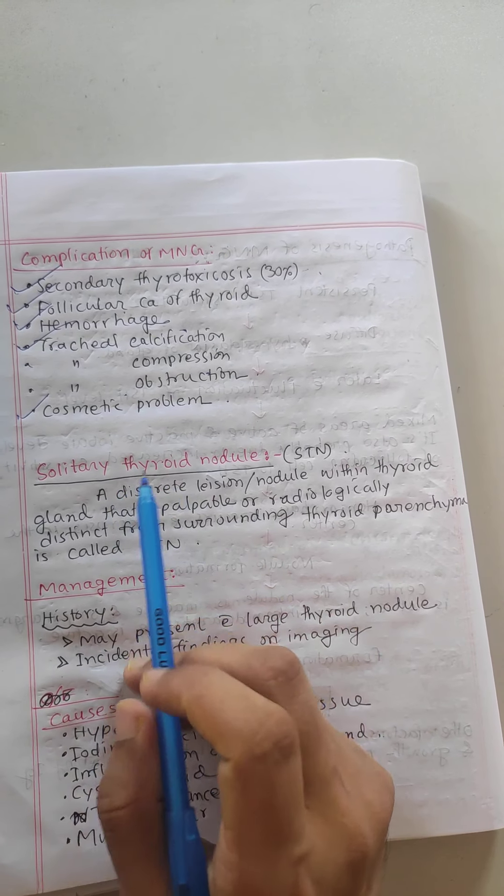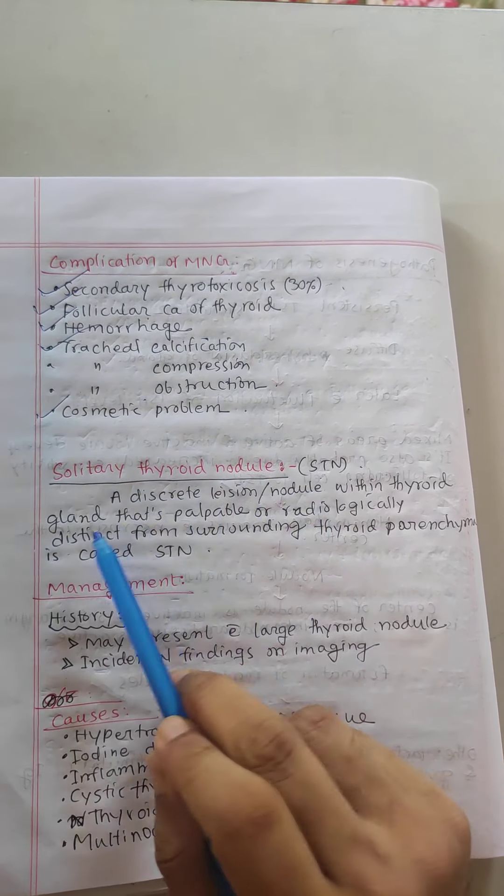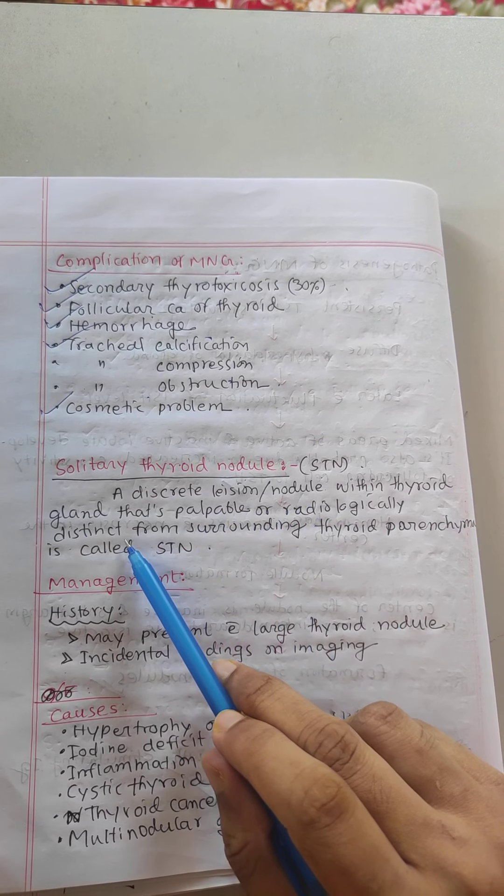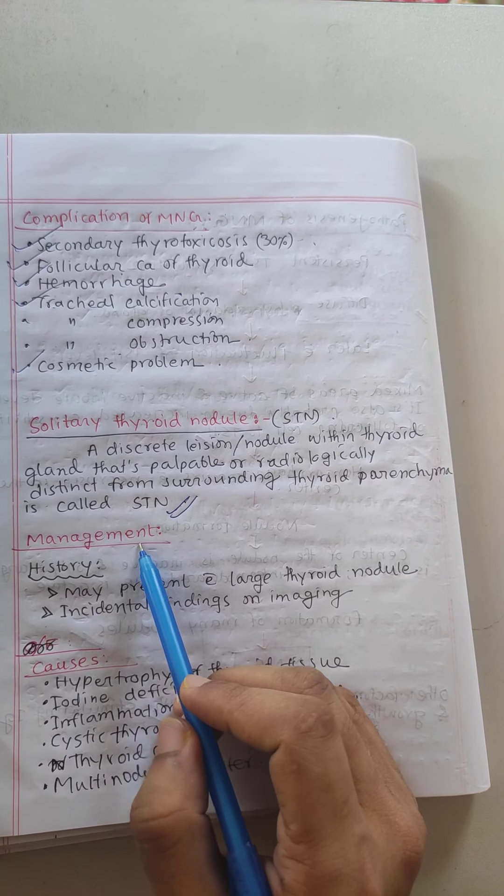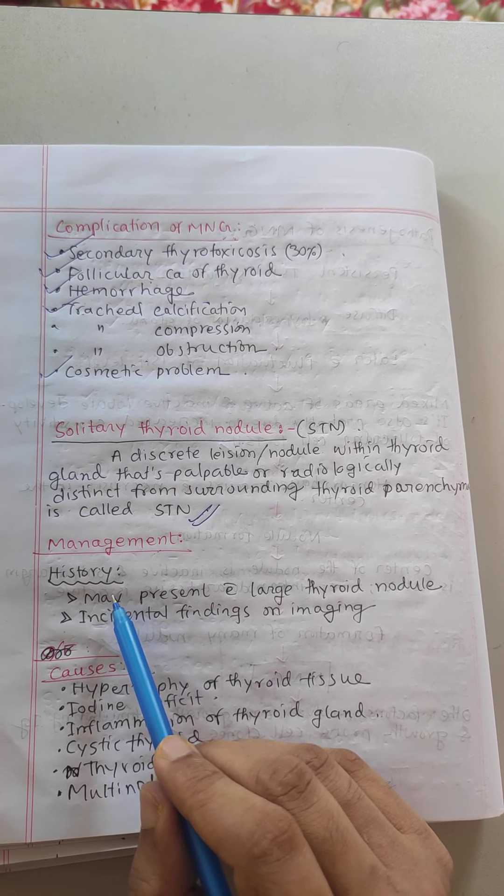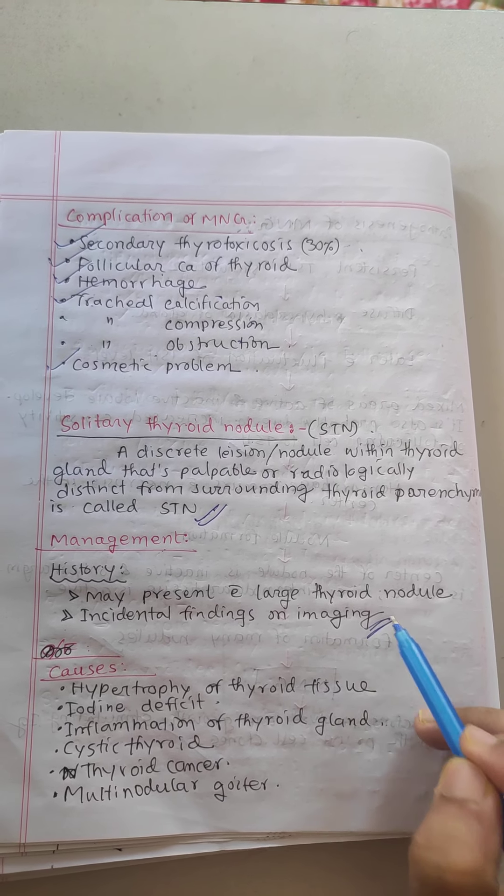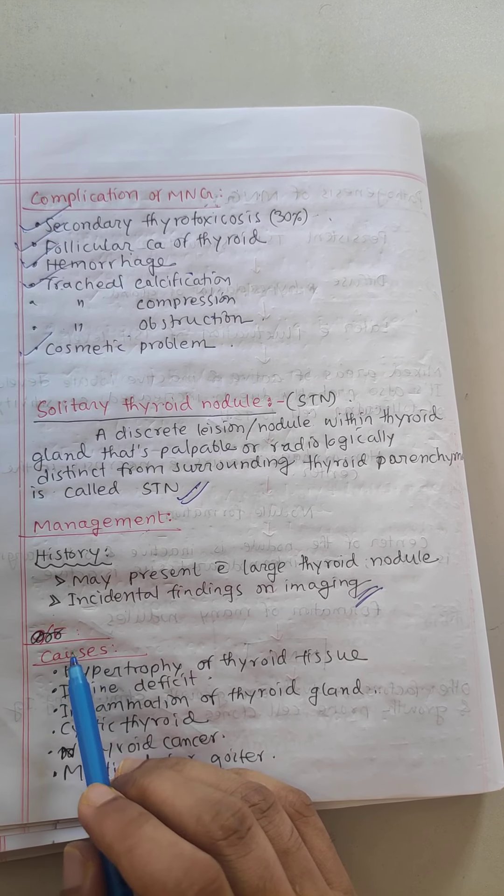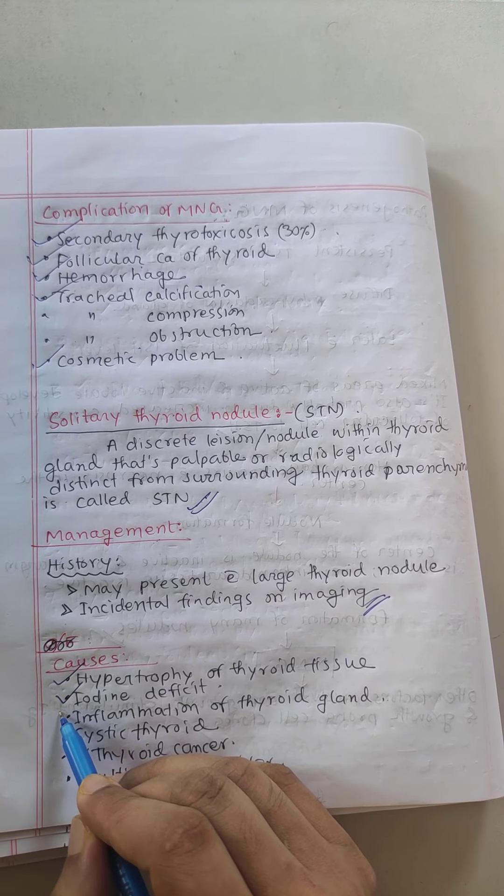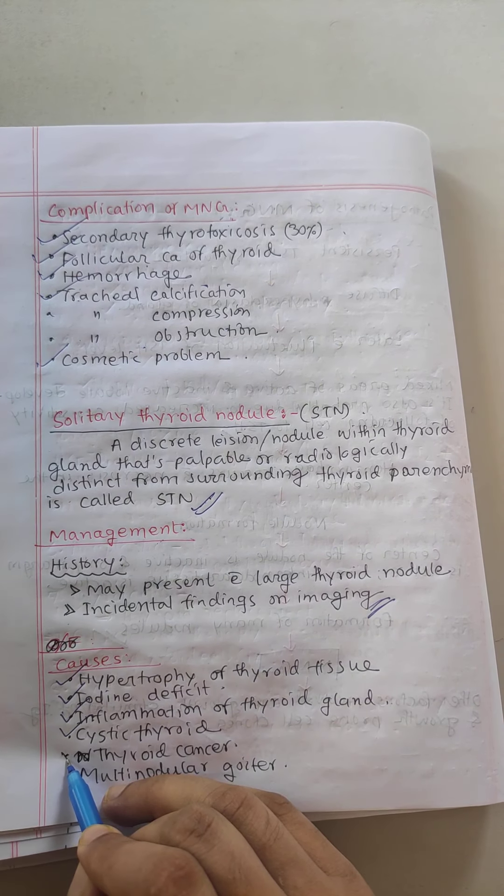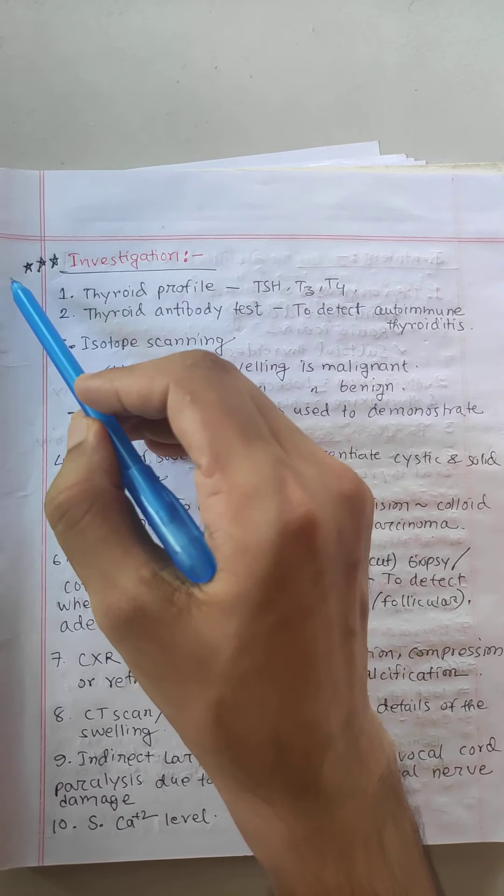Solitary thyroid nodule - what is it? It is a discrete lesion or nodule within the thyroid gland that is palpable or radiologically distinct from the surrounding thyroid parenchyma. Causes include hypertrophy of thyroid tissue, iodine deficiency, inflammation of the thyroid gland, cystic thyroid, thyroid cancer, and multinodular goiter.